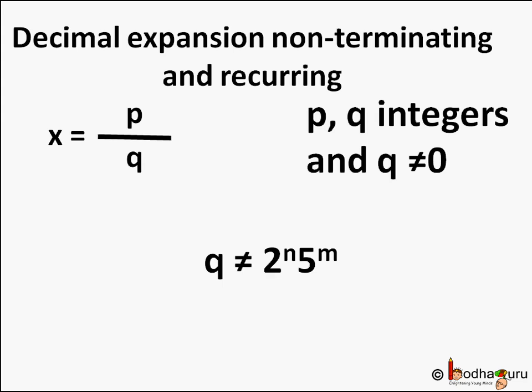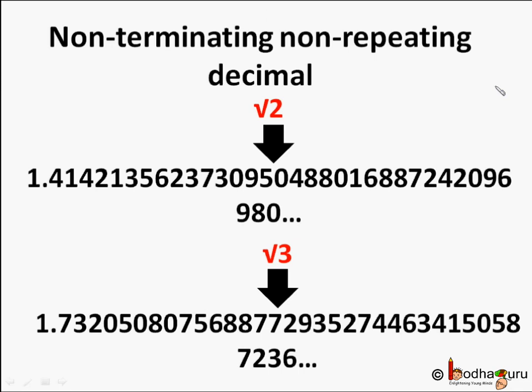Just by looking at the denominator q and doing its prime factorization, we can find out whether a fraction's decimal form will terminate or not. And what if the decimal is non-terminating and non-repeating? In that case it cannot be expressed as a ratio of two integers at all — because it's an irrational number. Like the square root of 2, which is 1.414213... and so on — non-terminating, non-repeating, and cannot be expressed as p by q. That's all for now, bye bye.